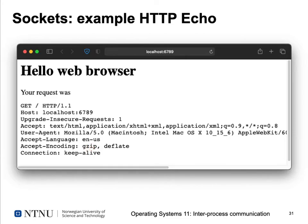This is a very simple example of network communication using sockets. The same approach works locally — for example on a Linux machine running the X Window System, connections between X clients and the X server are done using Unix domain sockets. But you can also redirect that connection over TCP/IP, so a program running on a remote machine like a cluster can display its graphical window on your local machine. Sockets are flexible because you don't have to rewrite your program — just reconfigure the protocol and address family.